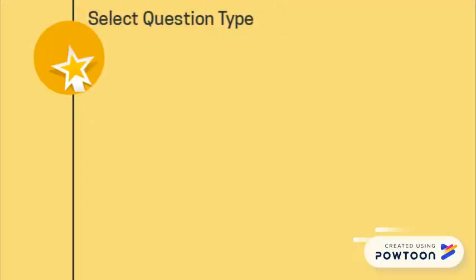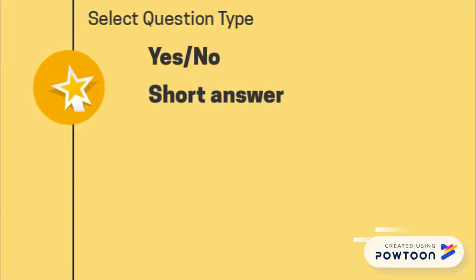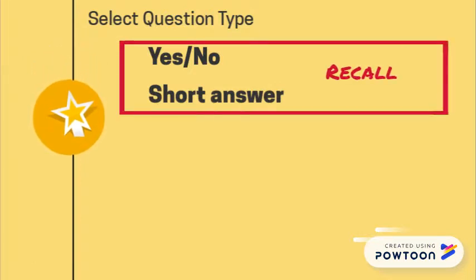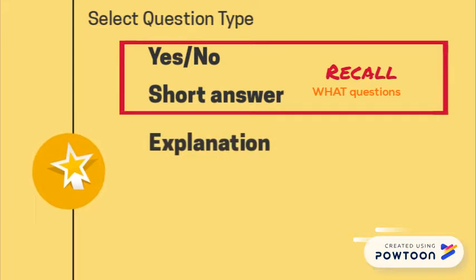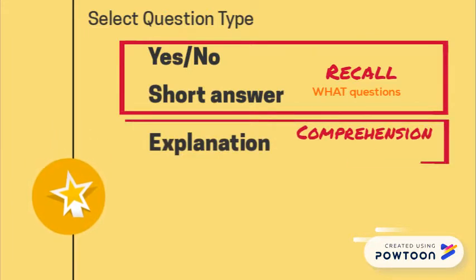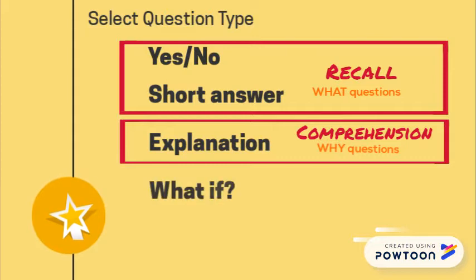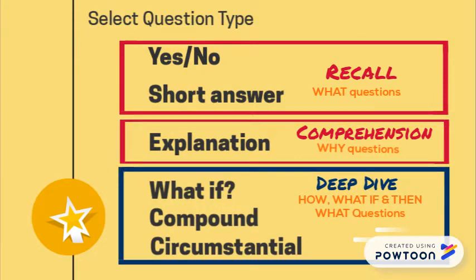The literature on inquiry-based teaching describes a wide variety of question types. Yes, no, or short answer questions are aimed at what the student recalls. Explanation questions are aimed at what the student understands. What-if, compound, or circumstantial questions are aimed to take the student on a deeper kind of dive.